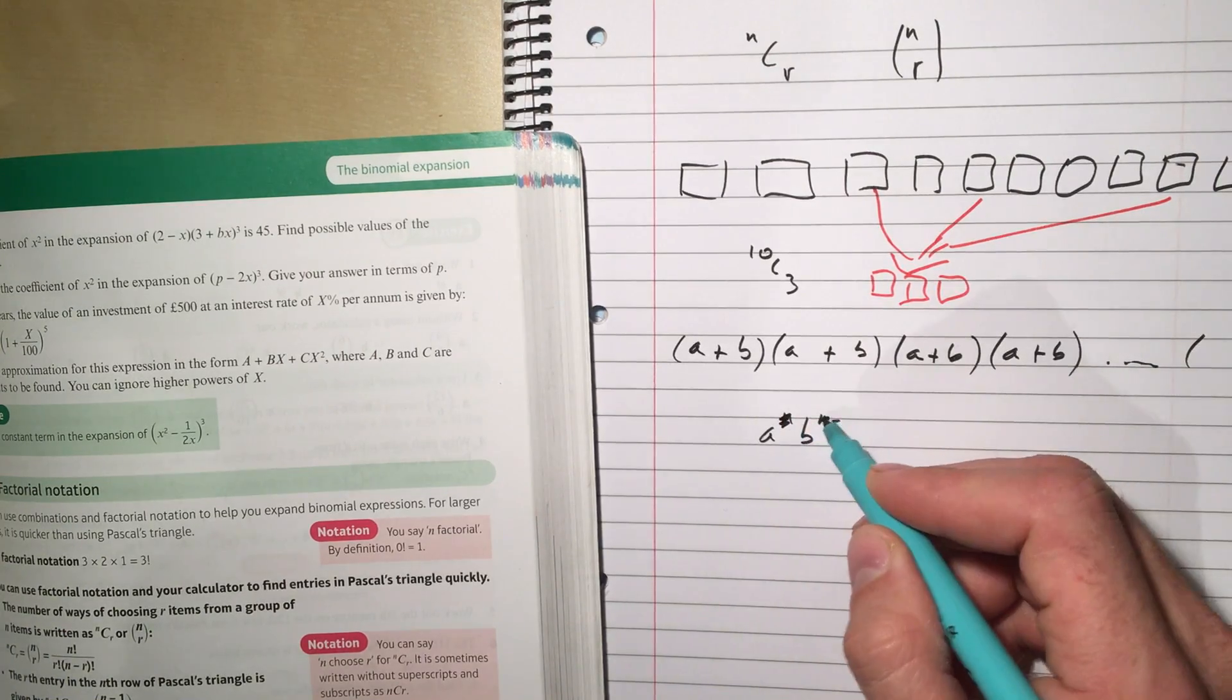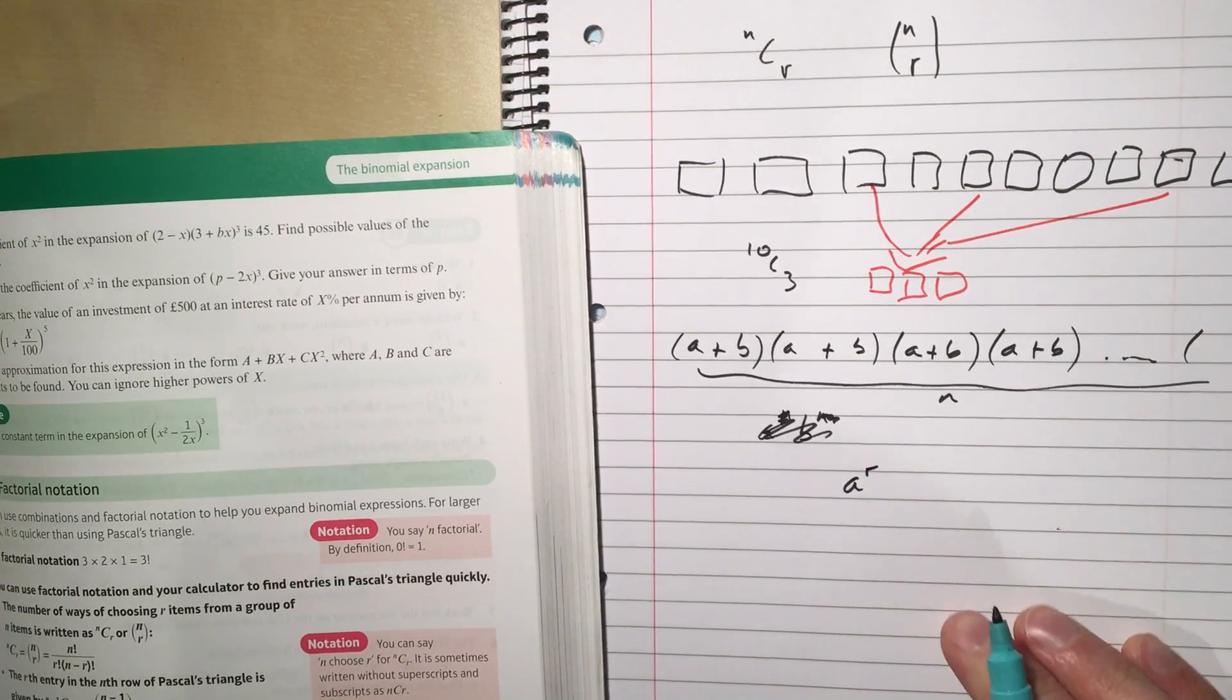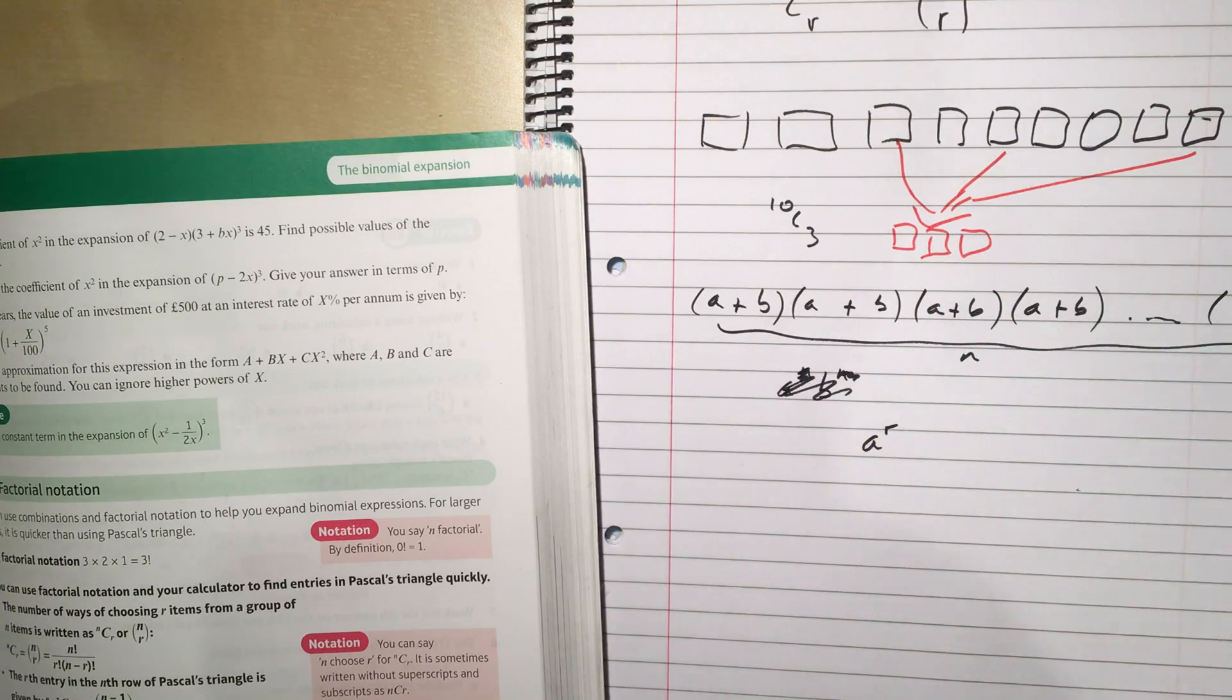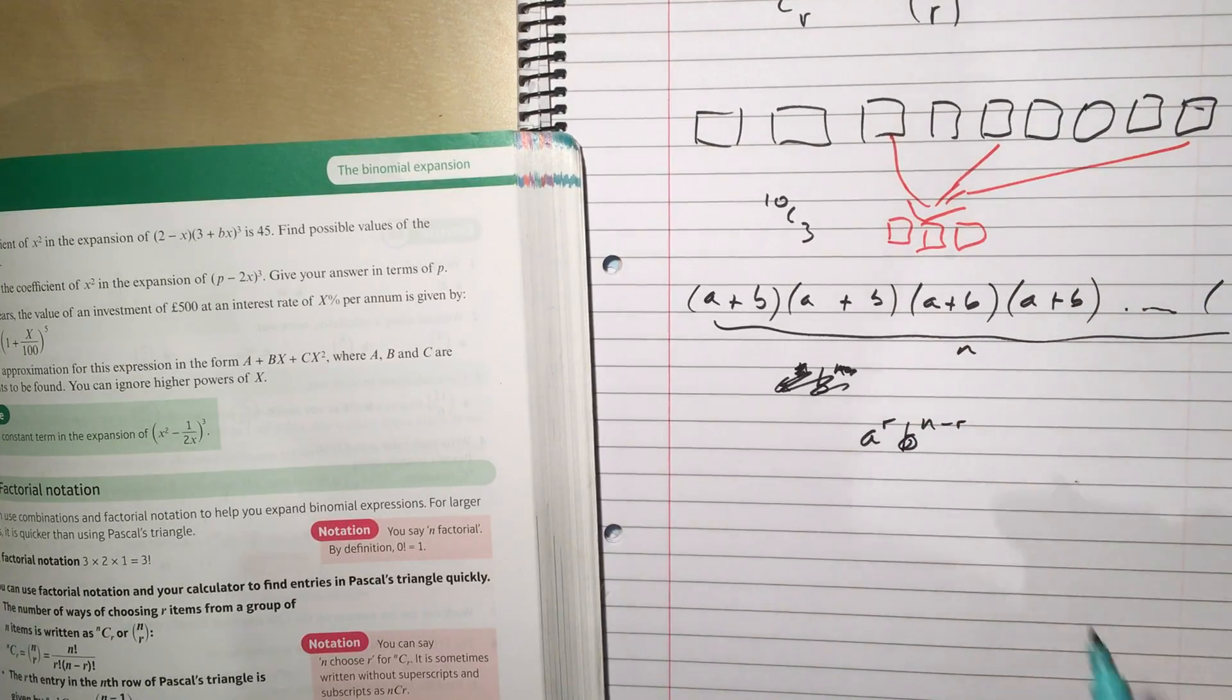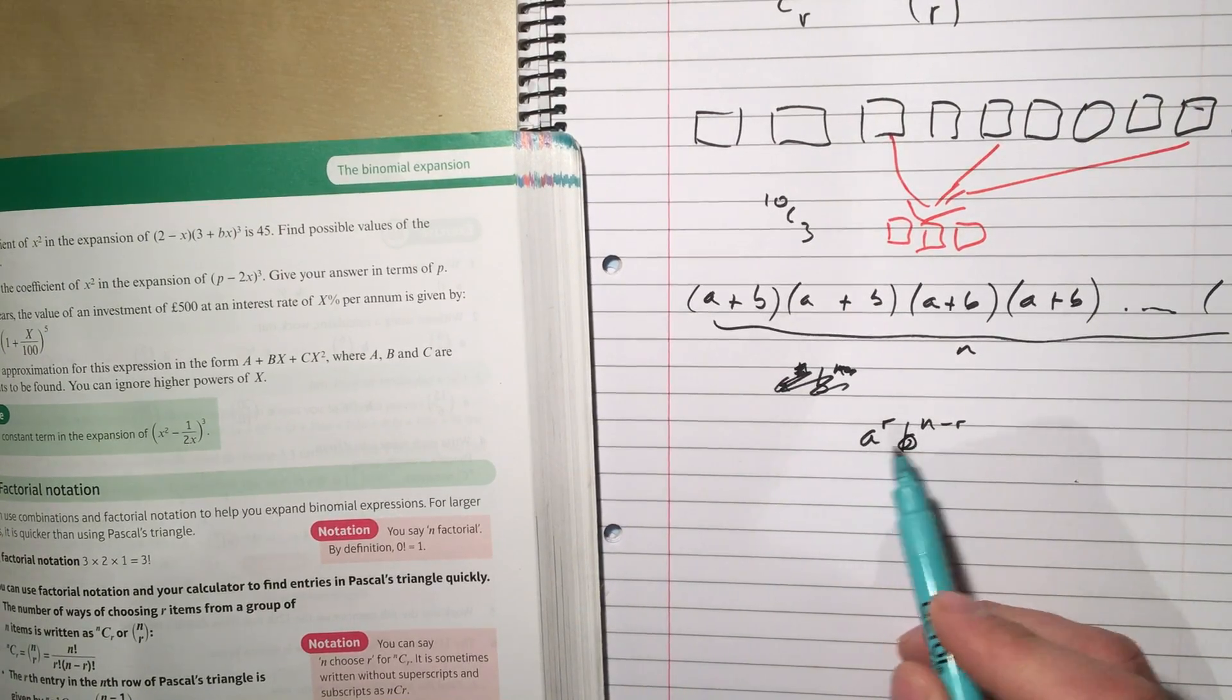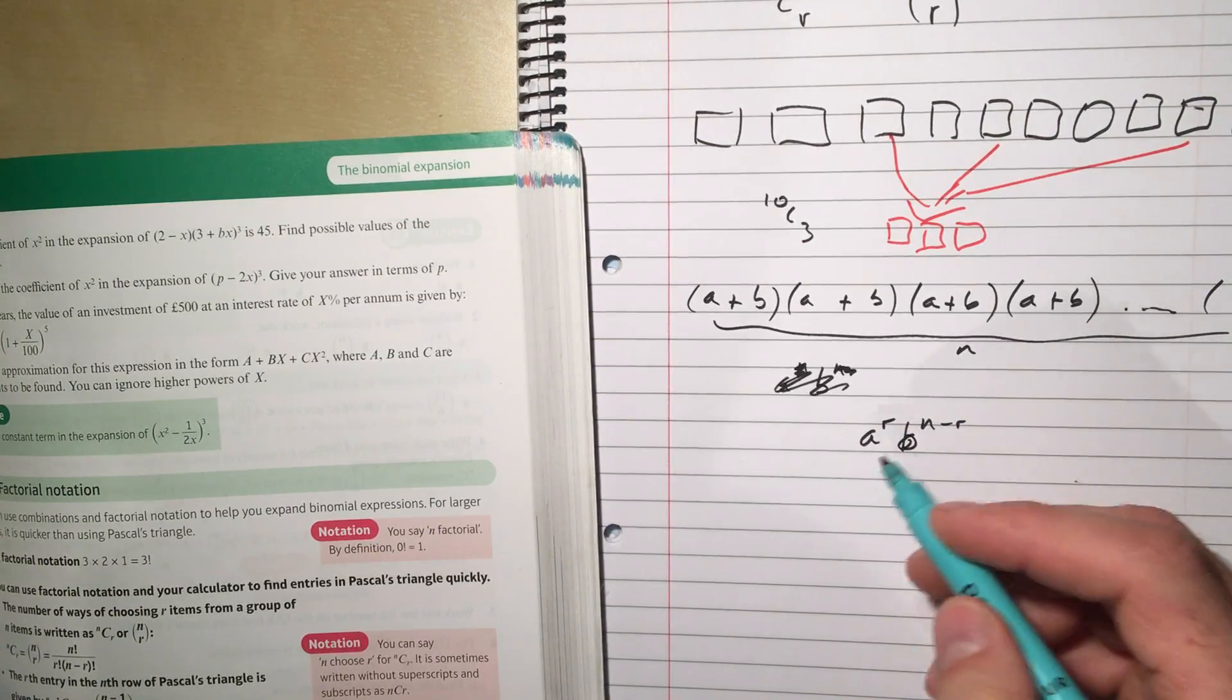If there are n brackets, if I want a to the power of r, then I need to have picked an a from r of these brackets, right? So that means that I picked a b from the rest of them, so that's n minus r. Now, I need to know, well, how many ways were there of picking that many a's and that many b's? Well, how many ways are there? n choose r.